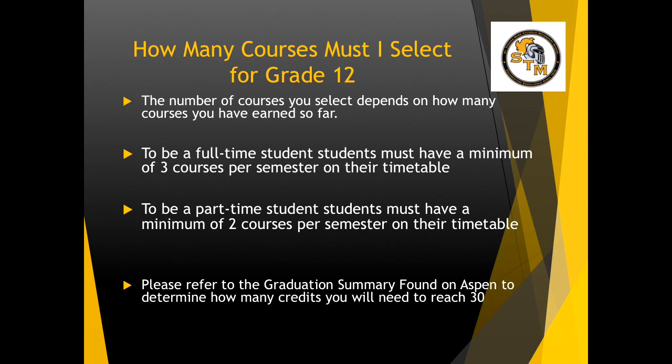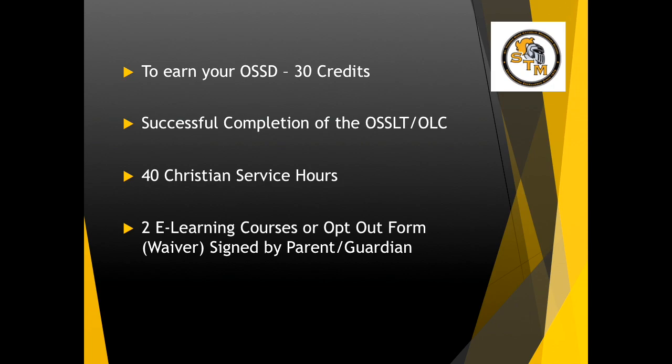This is why we say 3 courses per semester, which makes you full-time, or 2 courses per semester if you have been reaching ahead and taking courses in the summer. In order to earn your Ontario Secondary School Diploma, you must earn 30 credits. You must have successful completion of the Ontario Secondary School Literacy Test or have passed the Ontario Literacy Course. You must have completed 40 Christian service hours and either completed 2 e-learning courses or had your parent or guardian sign the opt-out form.